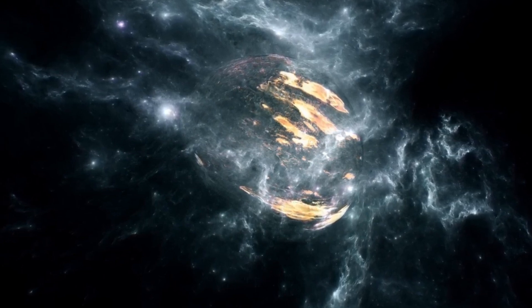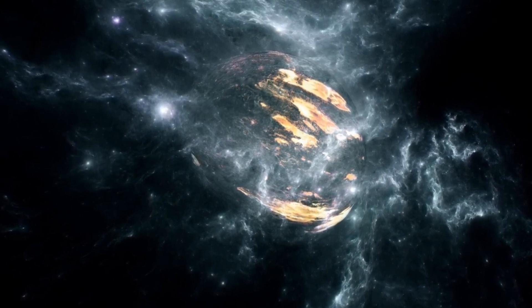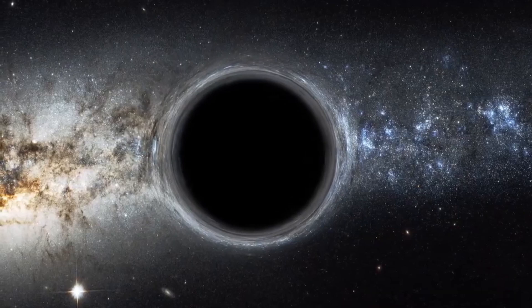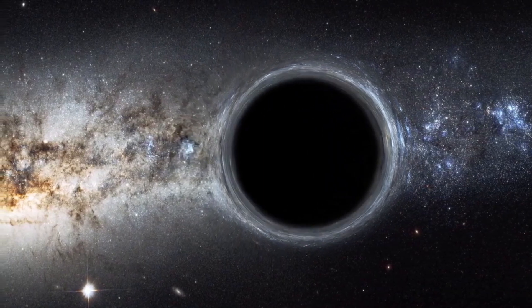Vega serves as a fascinating illustration of cosmic time travel. When we look at it in the night sky today, we are actually witnessing light that left its surface 64 years ago. This means that the light we now see was emitted decades before many historical events took place here on Earth.